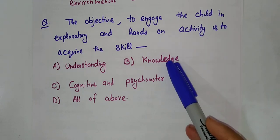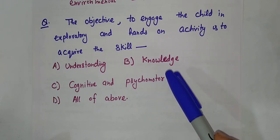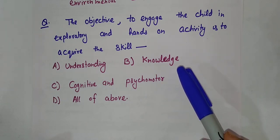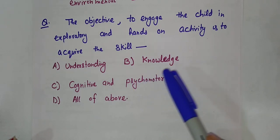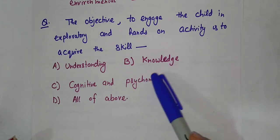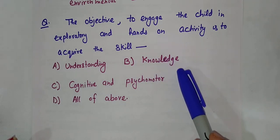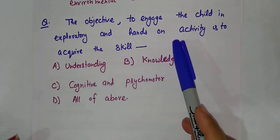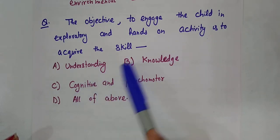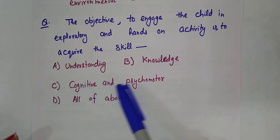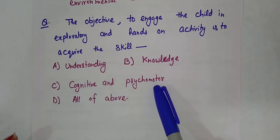Now you can read the four options and let me know your answers. I am going to pause the video — try to choose the right answer. See how many answers you get right, and if your answers are wrong, then listen to the lesson once more. The right answer for this is C — to acquire the cognitive and psychomotor skill. So that is the right answer for this question.